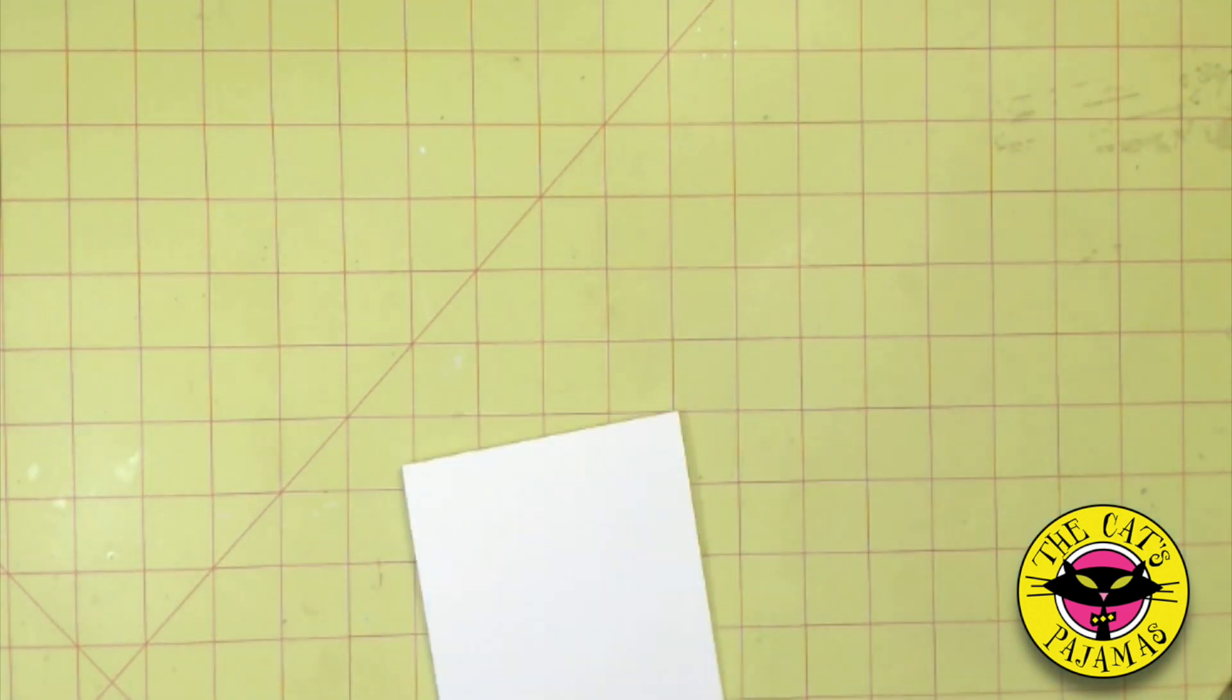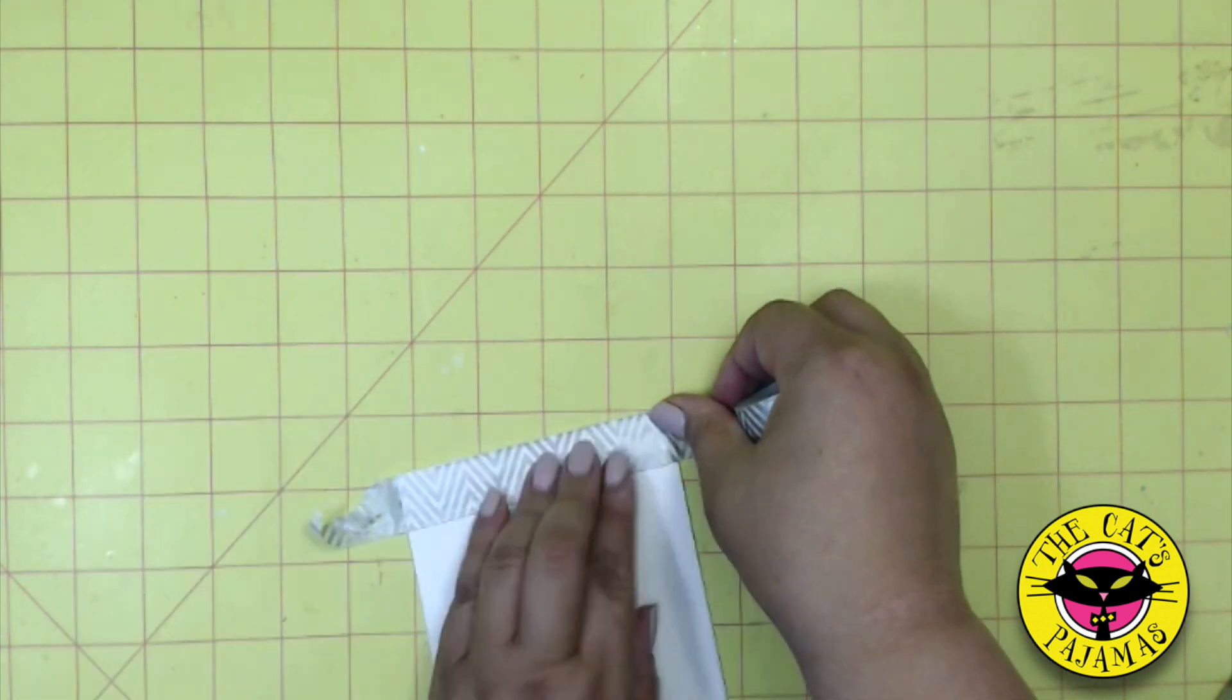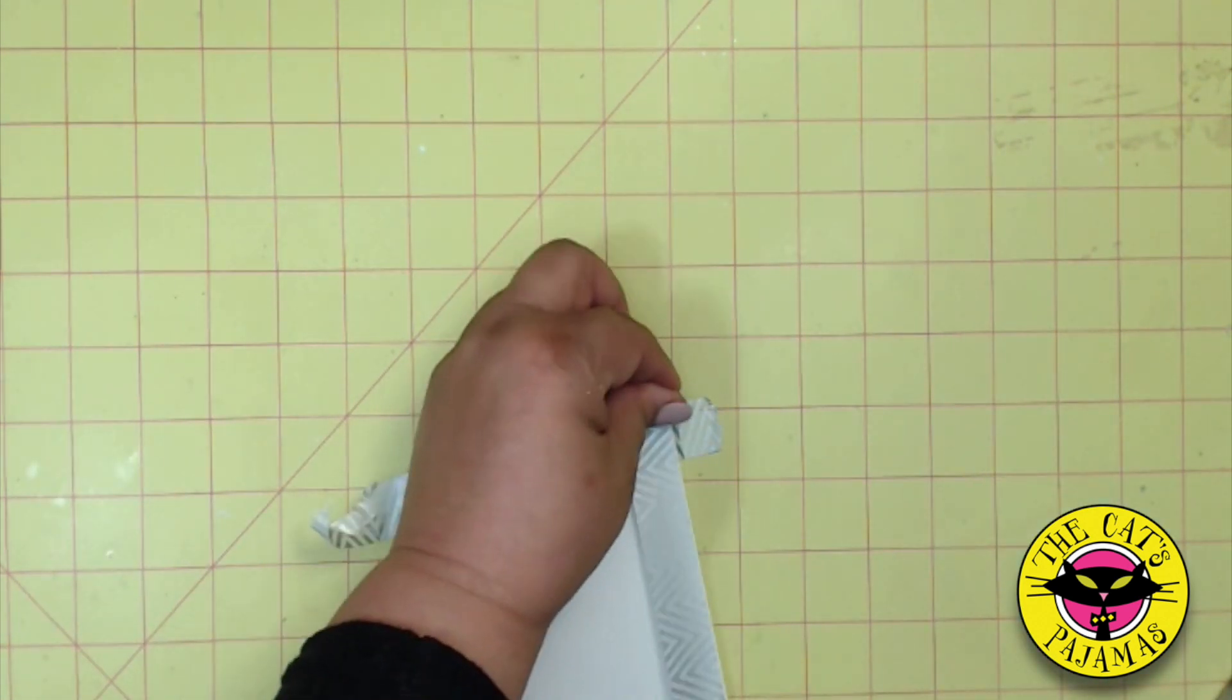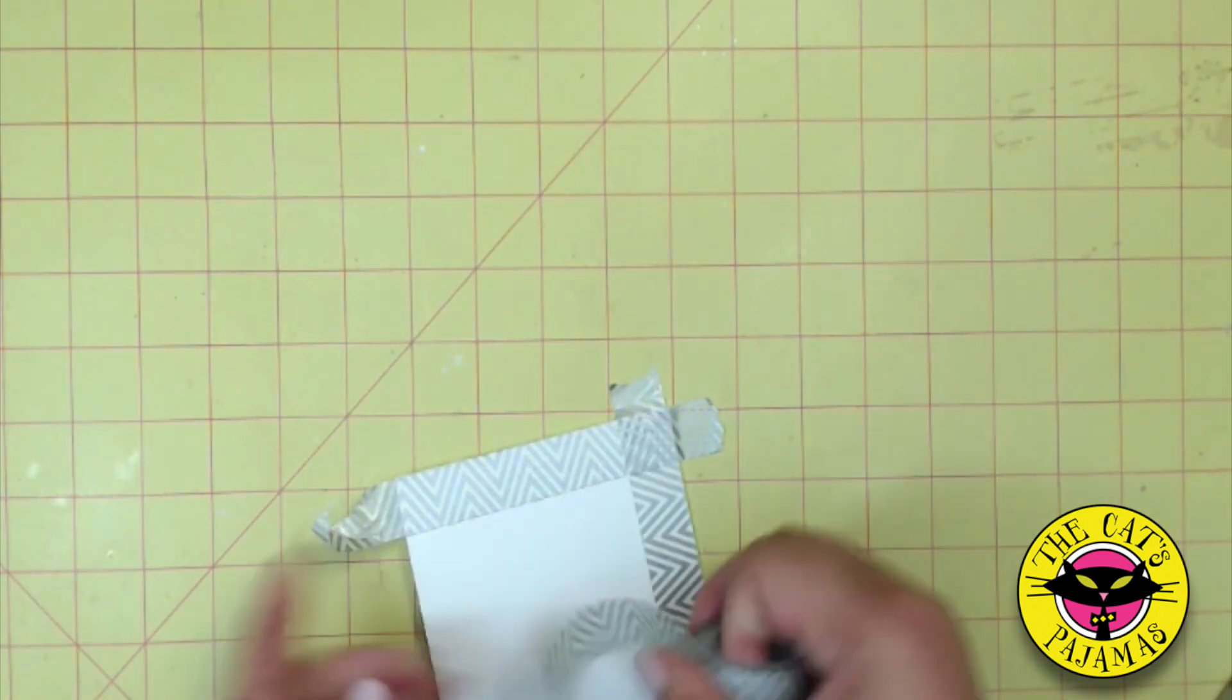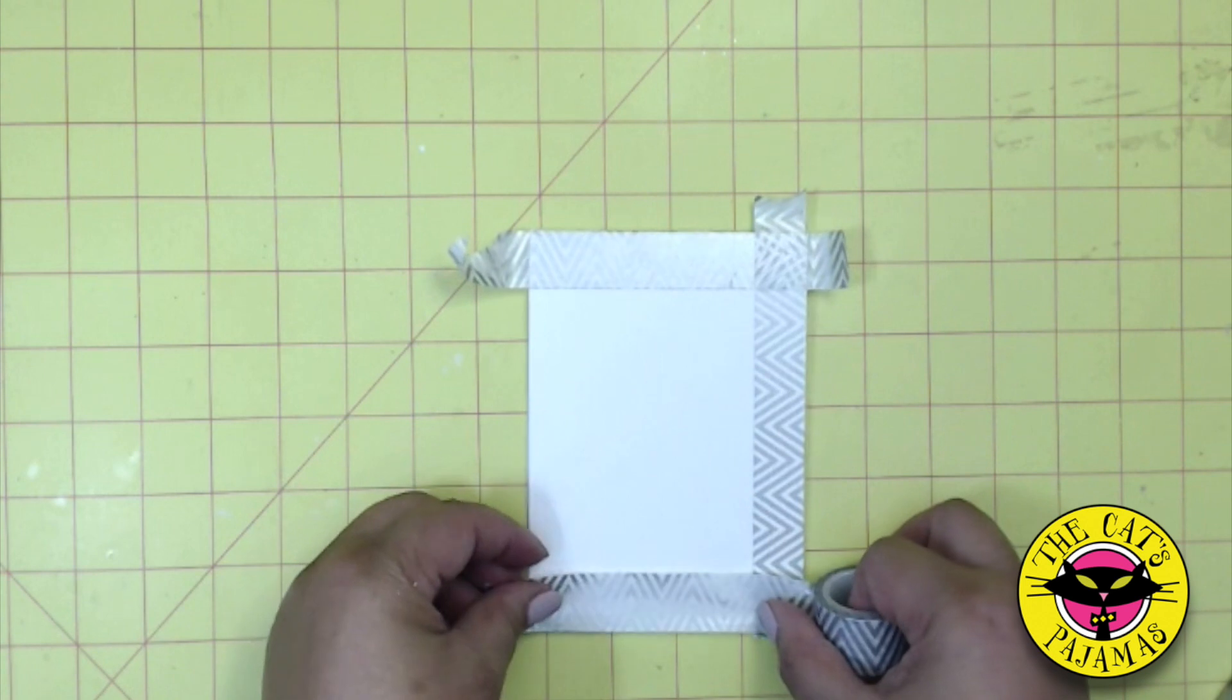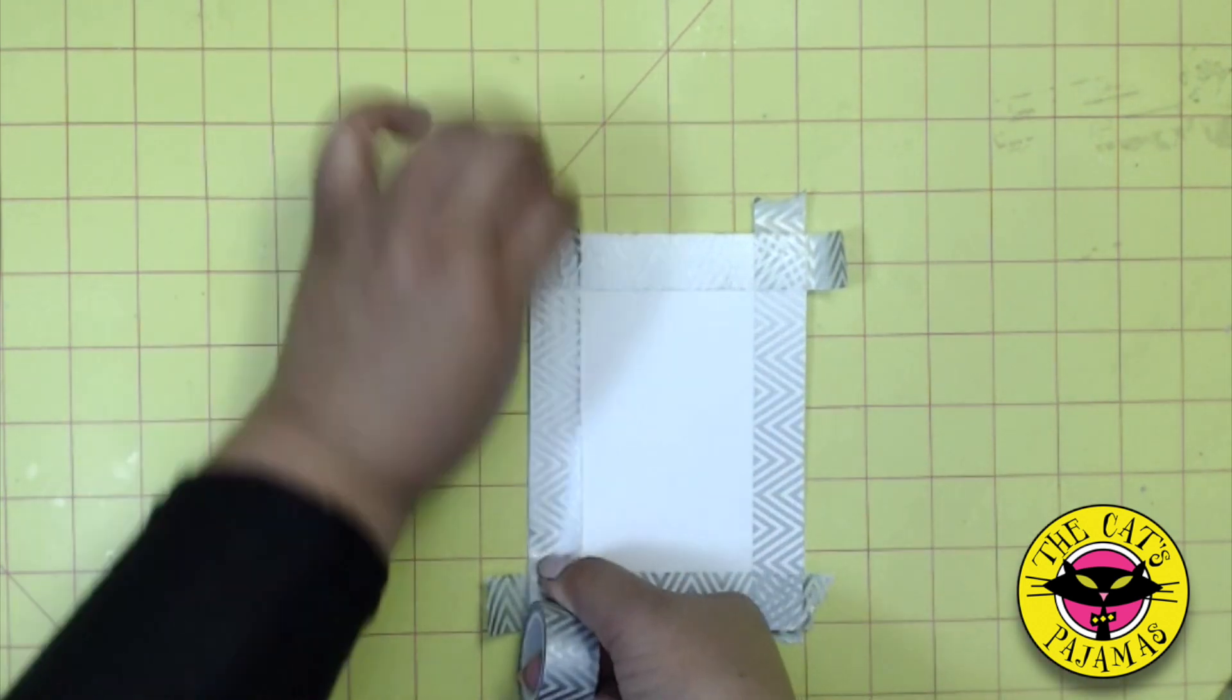I'll be pulling out the washi tape for the edges. Just line up the washi tape to the edges and tear. Now the thing about washi tape is that it's transparent. So where the washi tape overlaps, it looks a little messy to me.